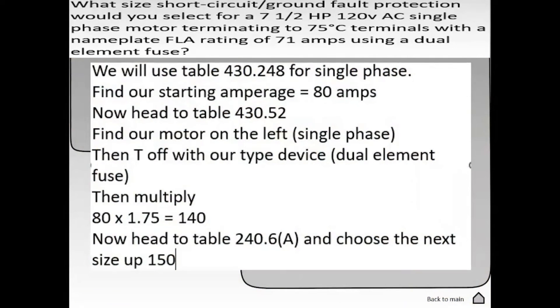We take our original FLC multiplied by 1.75 and that gives us a new amperage of 140 amps. Now we're going to head over to table 240.6A and choose the next standard size up. We're allowed to choose the next size up when we're doing short circuit ground fault protection. And the correct answer is 150.